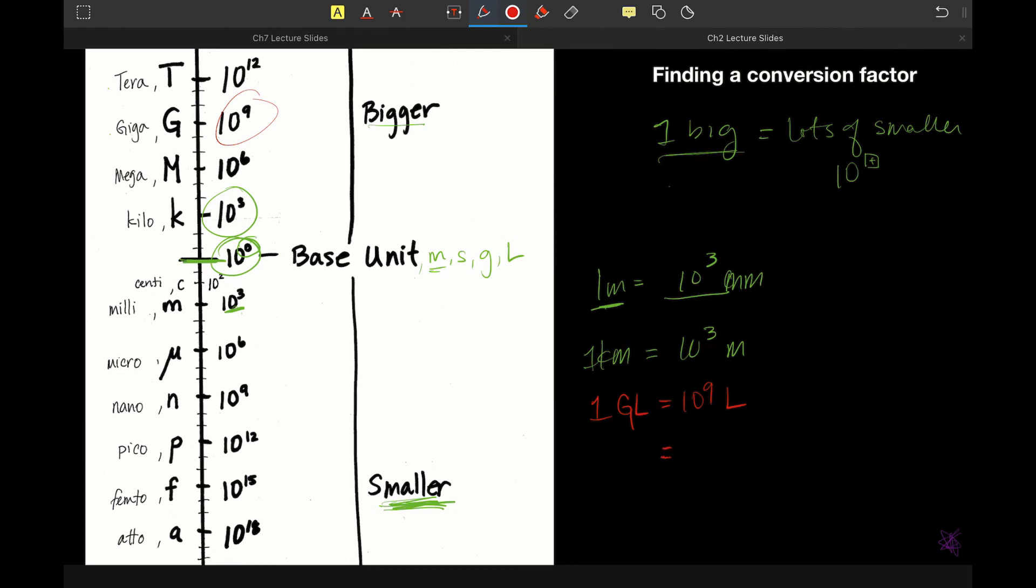If we wanted to write a relationship between nanometers and meters, which of these is bigger? Meters is bigger. So one meter is equal to 10 to the ninth nanometers.